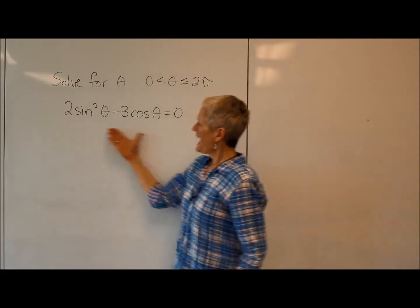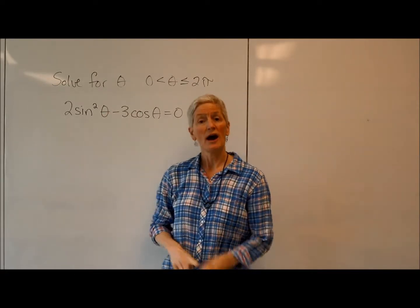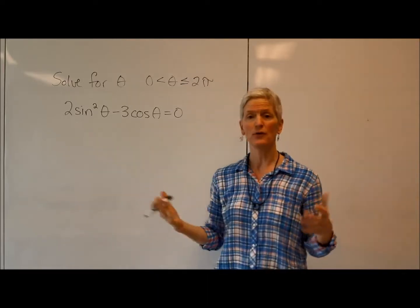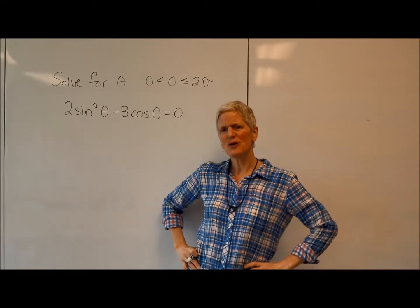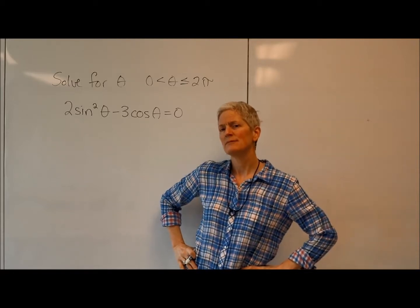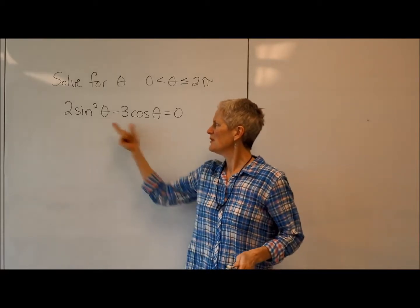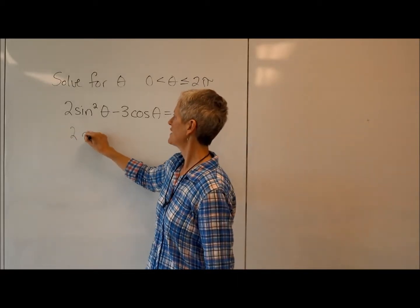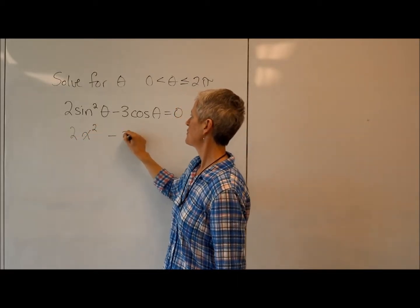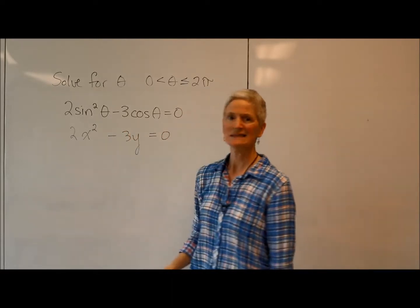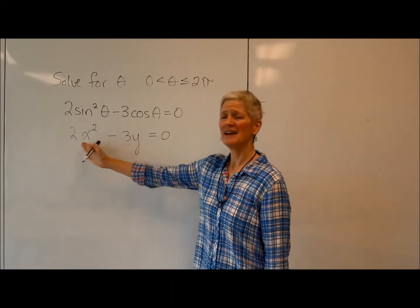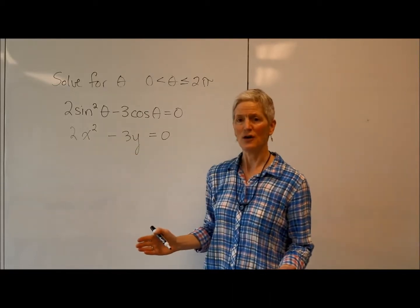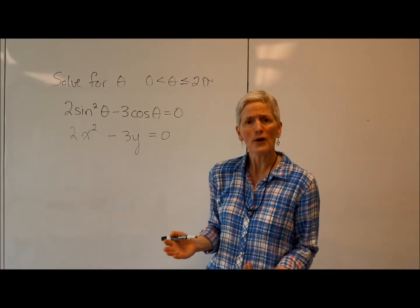All right, so I'm analyzing this and I'm saying, OK, I see a square. I have a quadratic trig equation. We've solved these before by factoring, but something looks a little strange here. I'm seeing two different trig equations. It's almost like 2x² minus 3y equals 0. It's kind of like having a quadratic with two different variables. I don't think I could solve that. I would need more information.